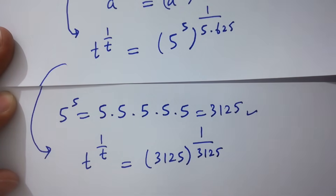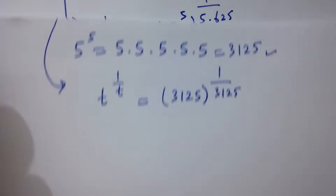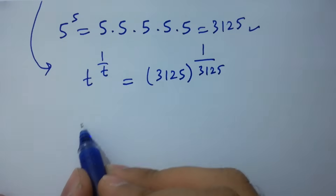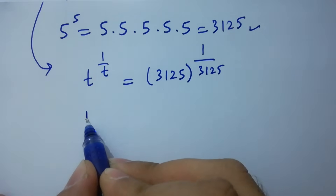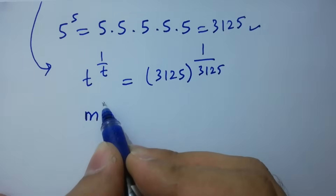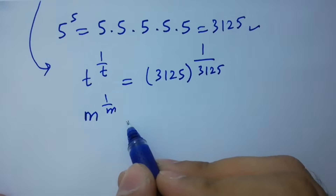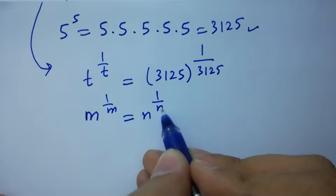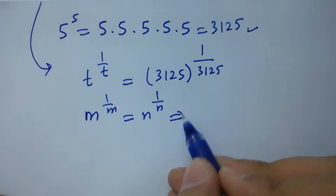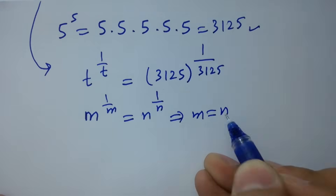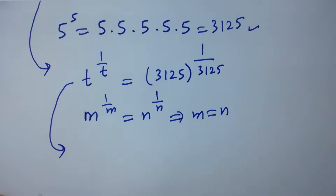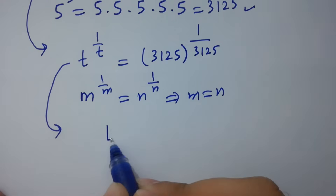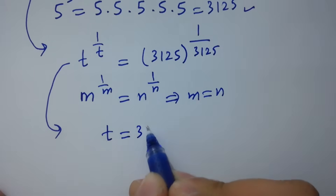Next, as we know, if m to the power 1 over m equals n to the power 1 over n, then m equals n. So we get the value of t, which is equal to 3125.